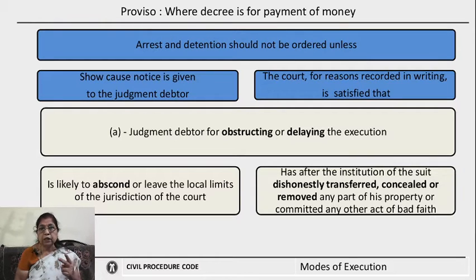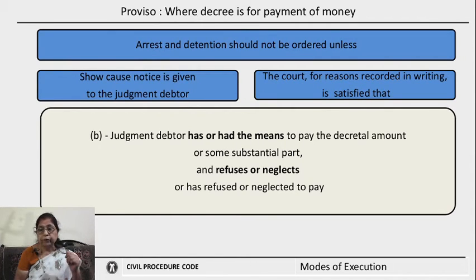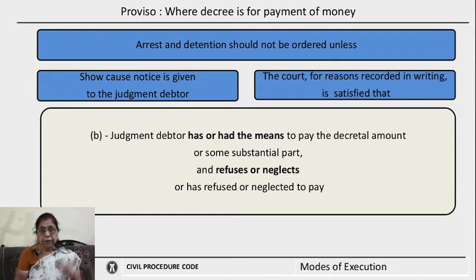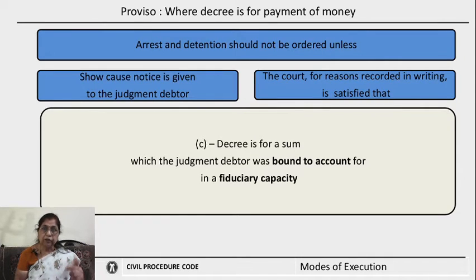The second condition for ordering arrest and detention is that it must be shown to the court that the judgment debtor had the means to pay the decretal amount at the time the suit was instituted, or has means to pay at least a substantial part of it, and having such means has refused or neglected to pay. The third condition is that arrest and detention may be ordered when the judgment debtor is bound to account for the decretal amount in a fiduciary capacity, and is trying to delay the decree.